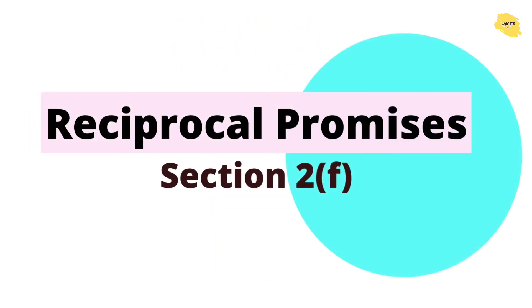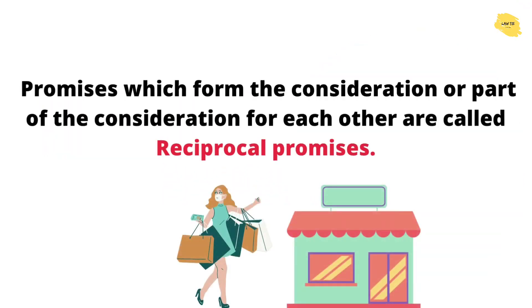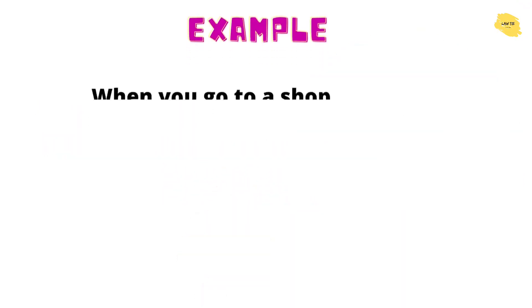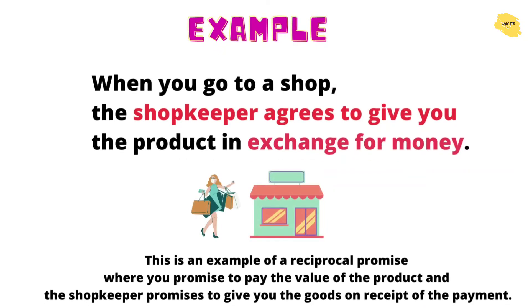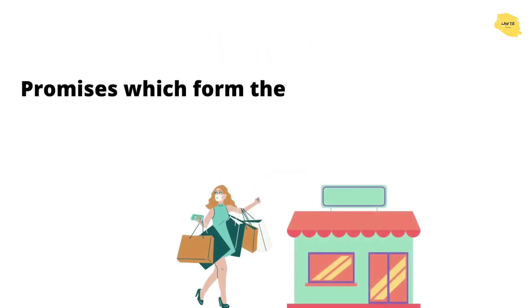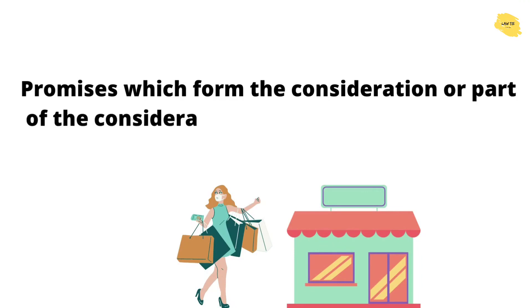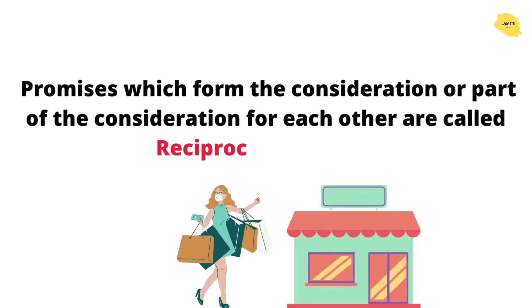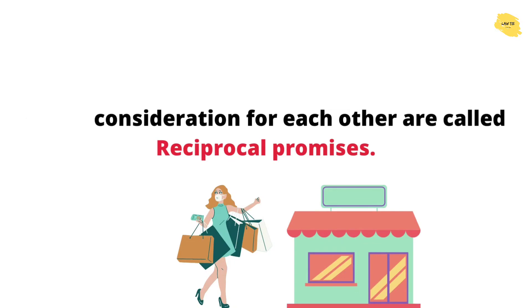Next is reciprocal promises, Section 2(f). To understand this, consider an example: when you go to a shop, the shopkeeper agrees to give you the product in exchange for money. The shop agrees to give you the product and in exchange you give money. These are reciprocal promises. As written: promises which form the consideration or part of the consideration for each other are called reciprocal promises.